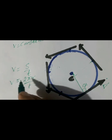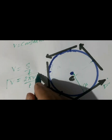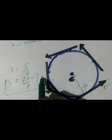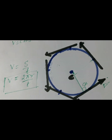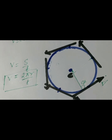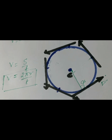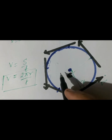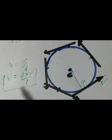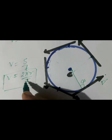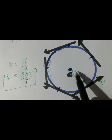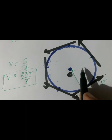So V is equal to 2πR over T. That is the speed of the body moving in a circle in one revolution, where T is the time period.